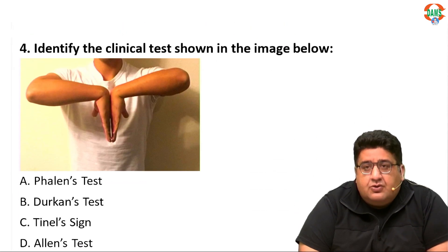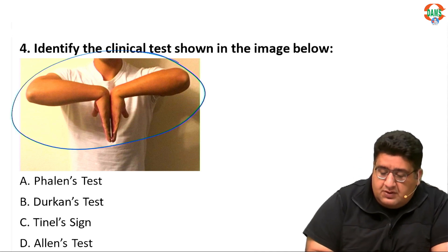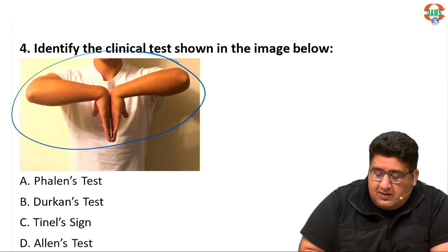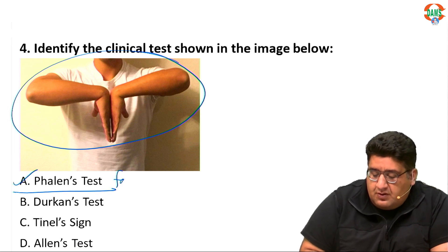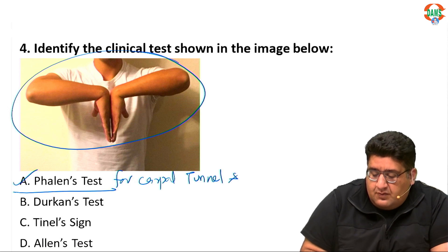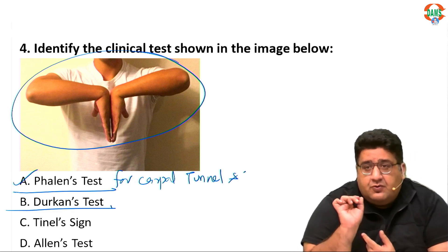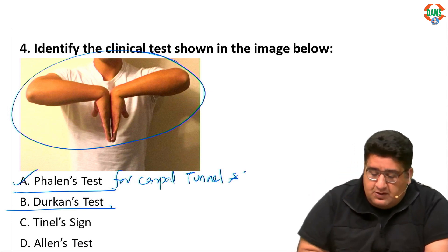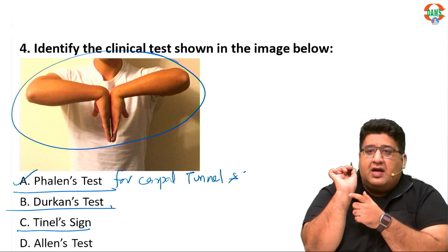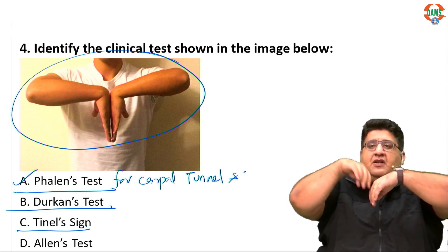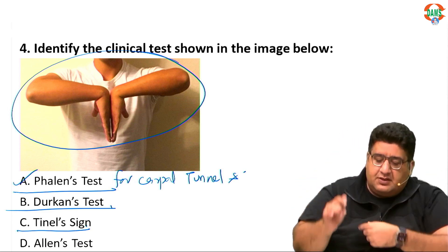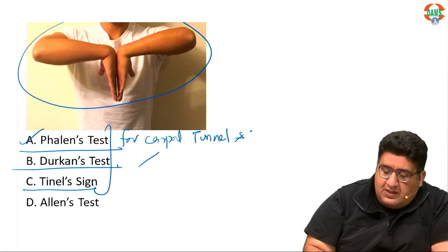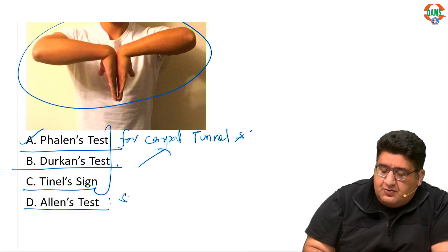Question four: identify the clinical test shown in the image. This is a test for carpal tunnel syndrome, called Phalen's test. There is also the Durkan test, in which you press the median nerve with the thumb, and the Tinel's sign, in which you tap. When you flex the wrist it is Phalen's, when you press it is Durkan, when you tap it is Tinel's. All three are for carpal tunnel syndrome.